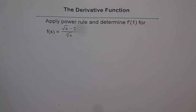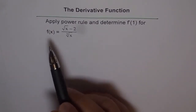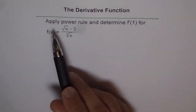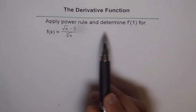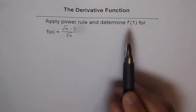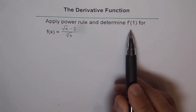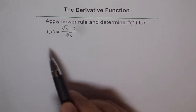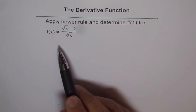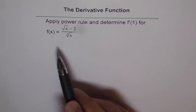The derivative function. Here is an application of the power rule. The question is: apply the power rule and determine f'(1) for f(x) equals 2 square root of x minus 2, divided by the third root of x.